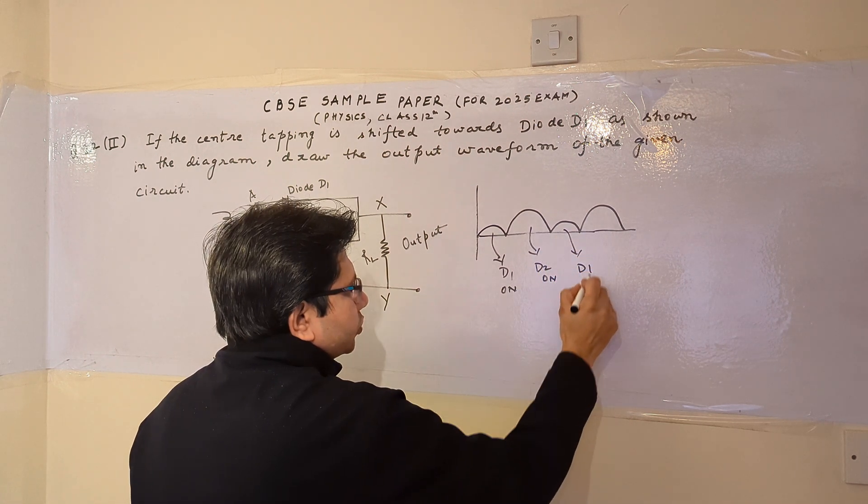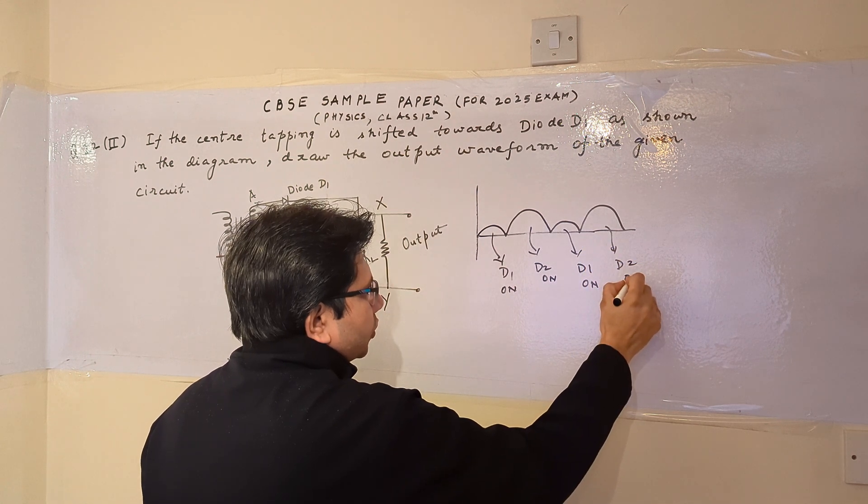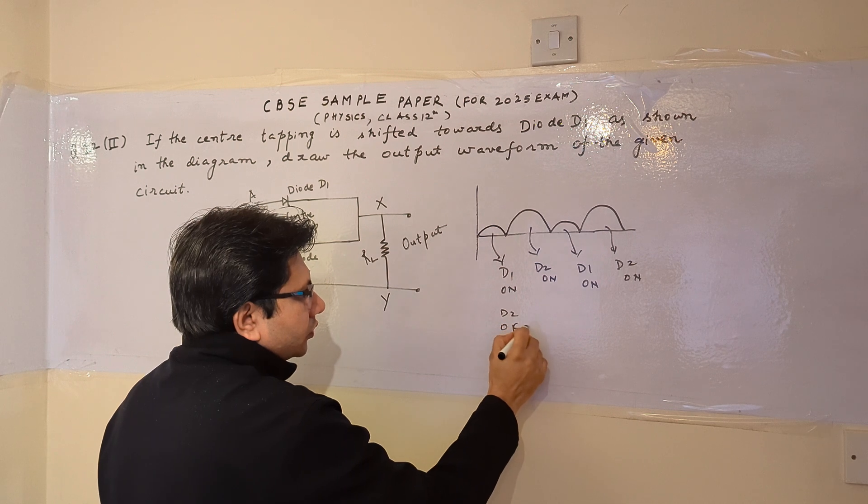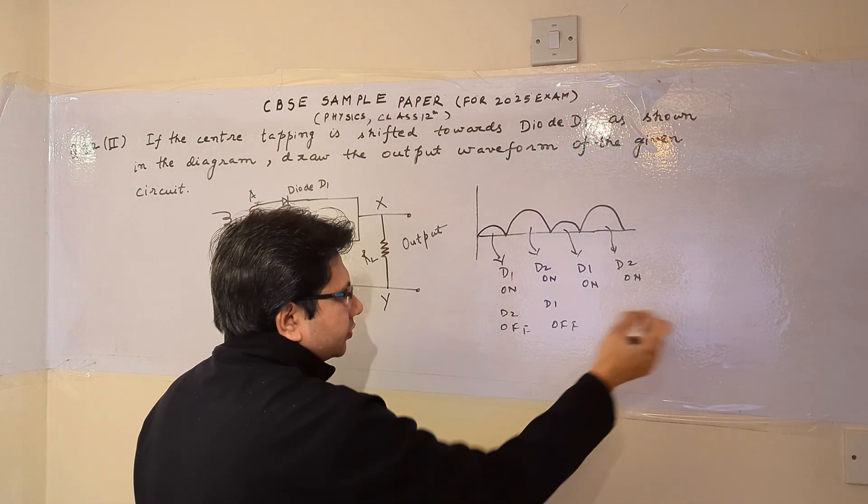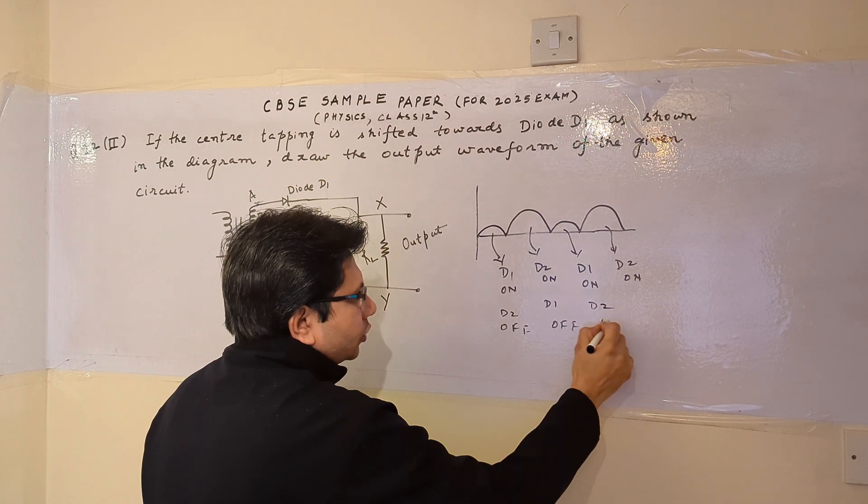And this again is the section corresponding to D1 on, and this corresponds to the section when D2 is on. When D1 is on, D2 is off, and when D2 is on, D1 is off, and vice versa. In a similar manner, the cycles repeat: D1 on, D2 off, D2 on, D1 off.